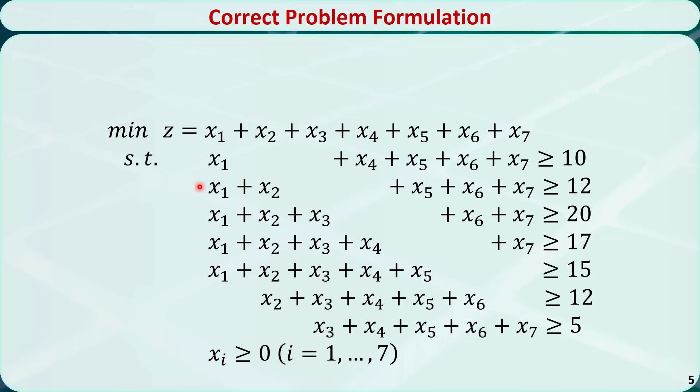With this definition, the objective function is the sum of x1 through x7. The problem formulation is listed here. This is the correct problem formulation.